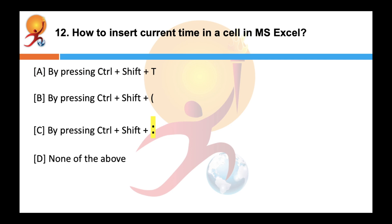How to insert current time in a cell in an MS Excel? Correct answer is C. The current time can be inserted in an active cell by pressing CTRL plus SHIFT plus the key for semicolon. So instead of semicolon, you will find double dots. And always remember, the CTRL plus semicolon key combination inserts current date.